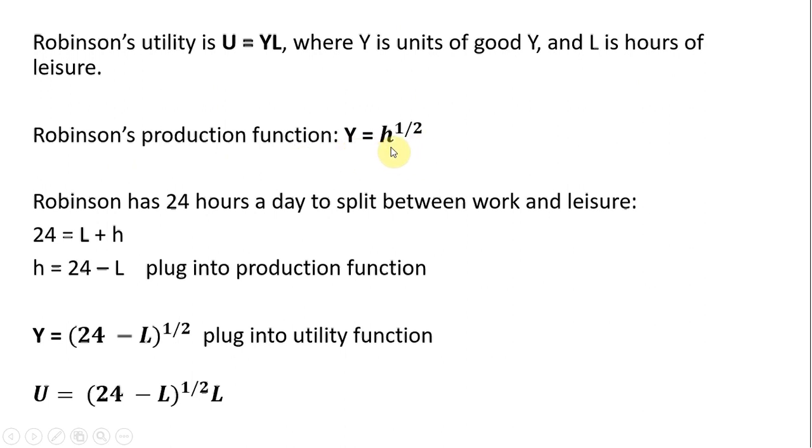where H is hours of work. Robinson is endowed with 24 hours a day that can be split between work, which produces good Y, and leisure. So this condition, 24 hours, will be some combination of leisure time plus hours of work. If we solve this equation for H, hours of work equals 24 minus hours of leisure.